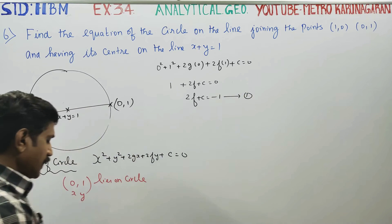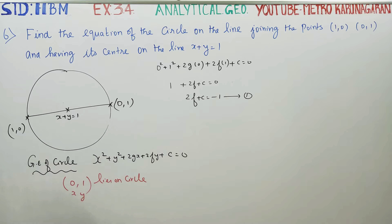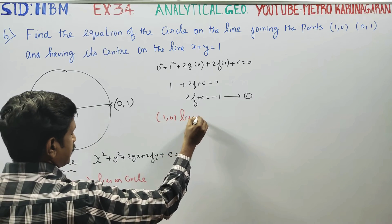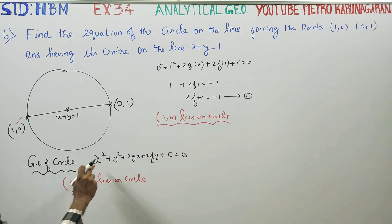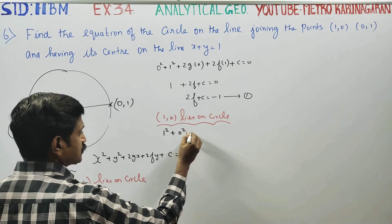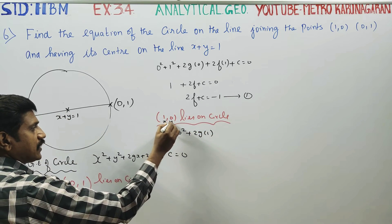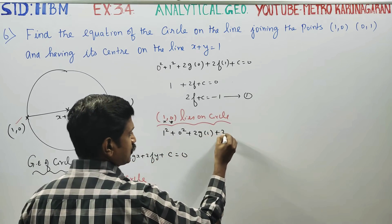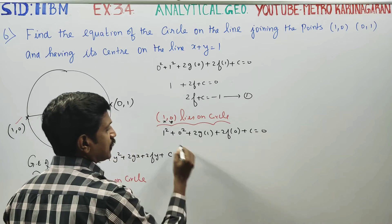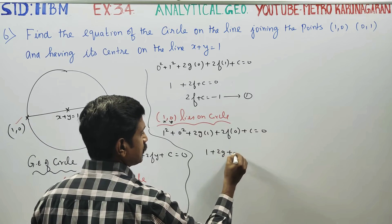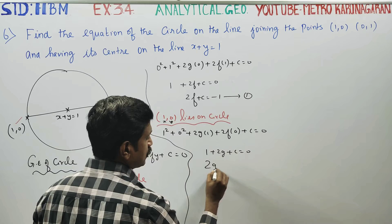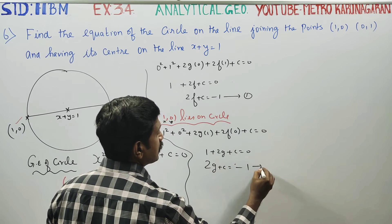Now use point (1,0). Point (1,0) lies on the circle. Substituting x equal to 1 and y equal to 0: 1² plus 0² plus 2g into 1 plus 2f into 0 plus c equal to 0. This gives 1 plus 2g plus c equal to 0, therefore 2g plus c equal to minus 1. This is equation number 2.